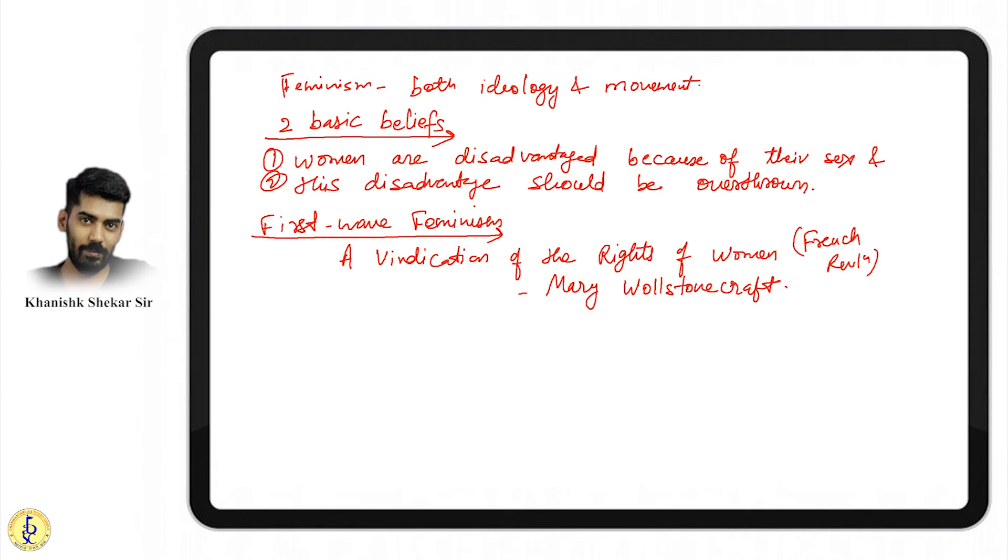In first wave, they talked about female suffrage—women must have the right to vote. Same legal and political rights like men. This is early feminism from mid-19th century focused on political and legal equality. It happened in US in 1848 with the famous Seneca Falls Convention, marking the birth of the US women's rights movement.